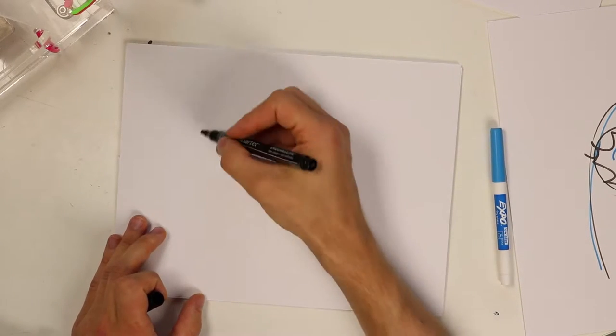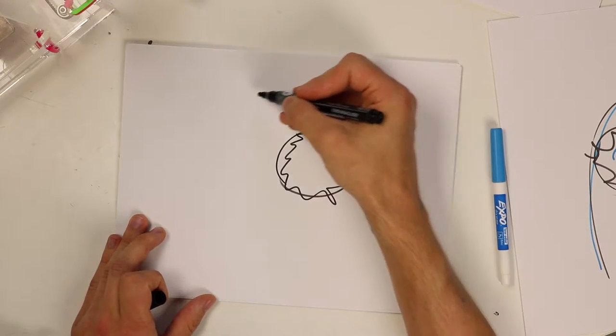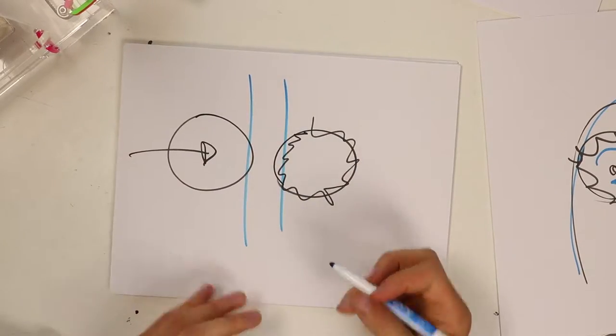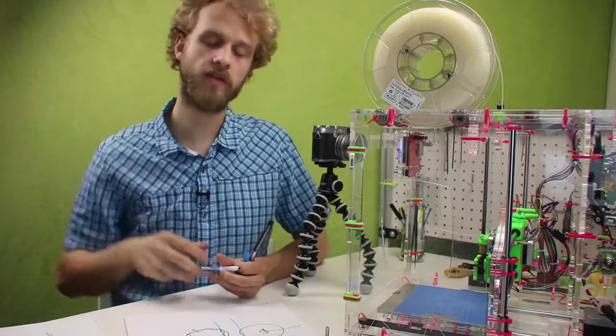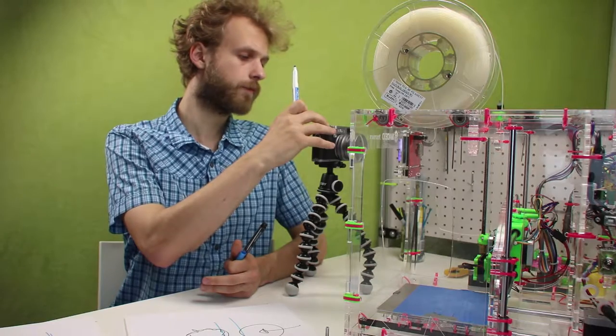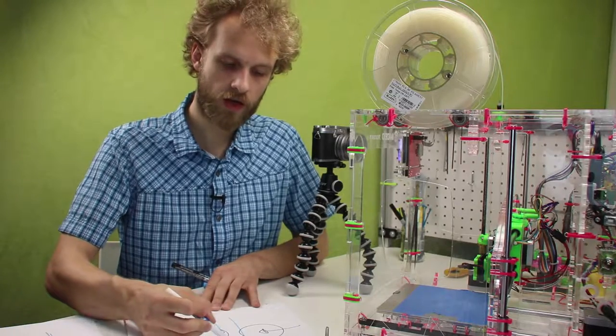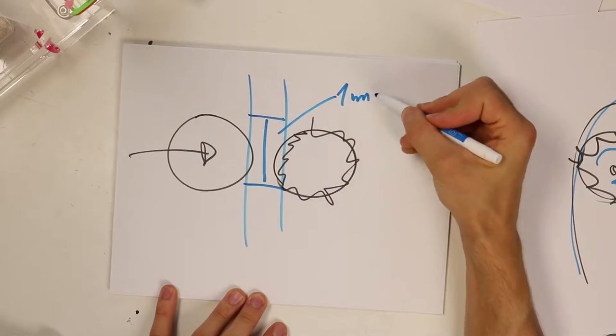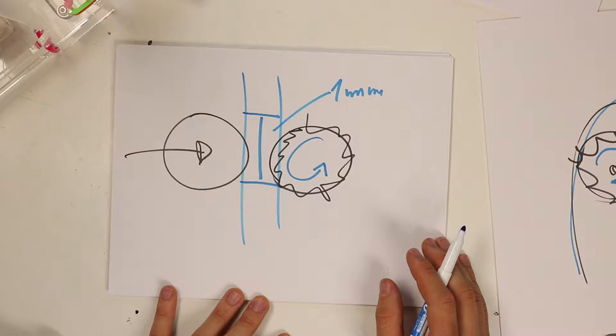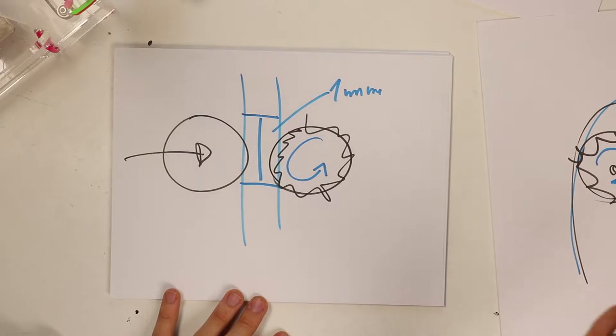the way extruder works is there is a drive gear with teeth on the right side and there is a bearing pushing the filament into the teeth. And as the motor rotates, the filament is being pushed down. This value, 140, there's nothing else than say for every one millimeter the filament needs to be pushed down, the extruder motor will rotate the drive side gear, 140 steps or micro steps in our case.